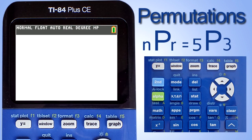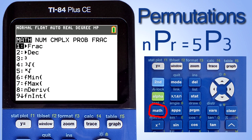To solve this permutation with the TI-84 Plus CE calculator, press the math key here. This screen pops up. Use the right arrow key and move over to PROB.